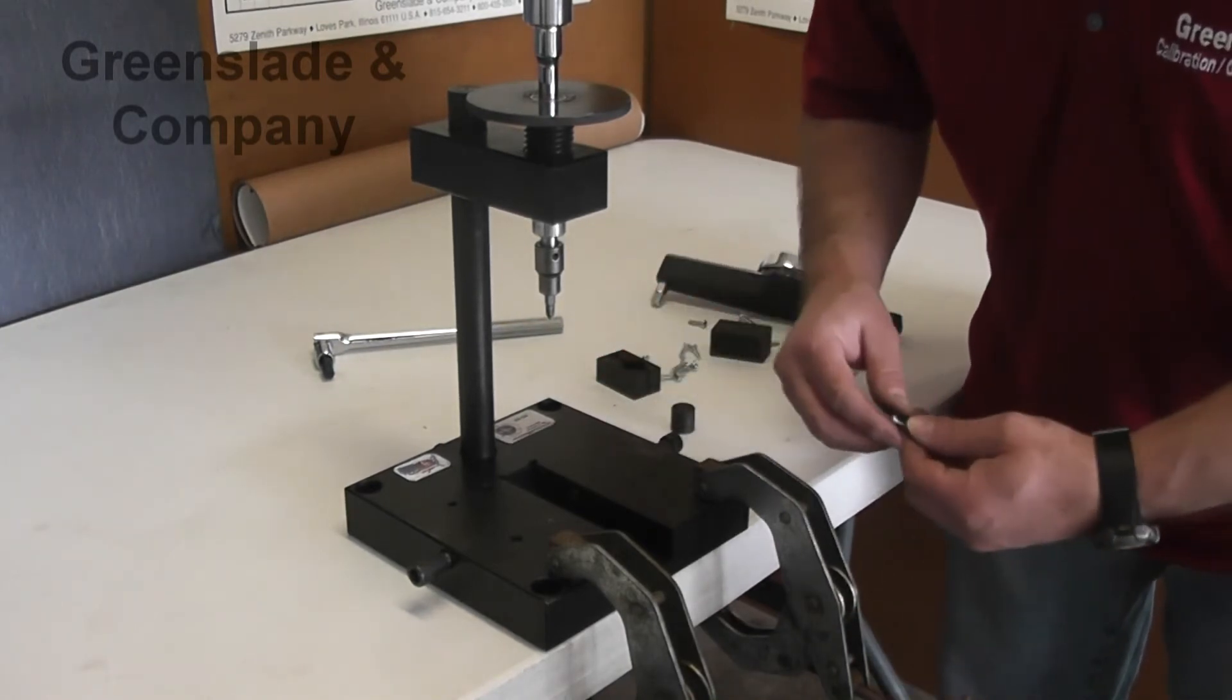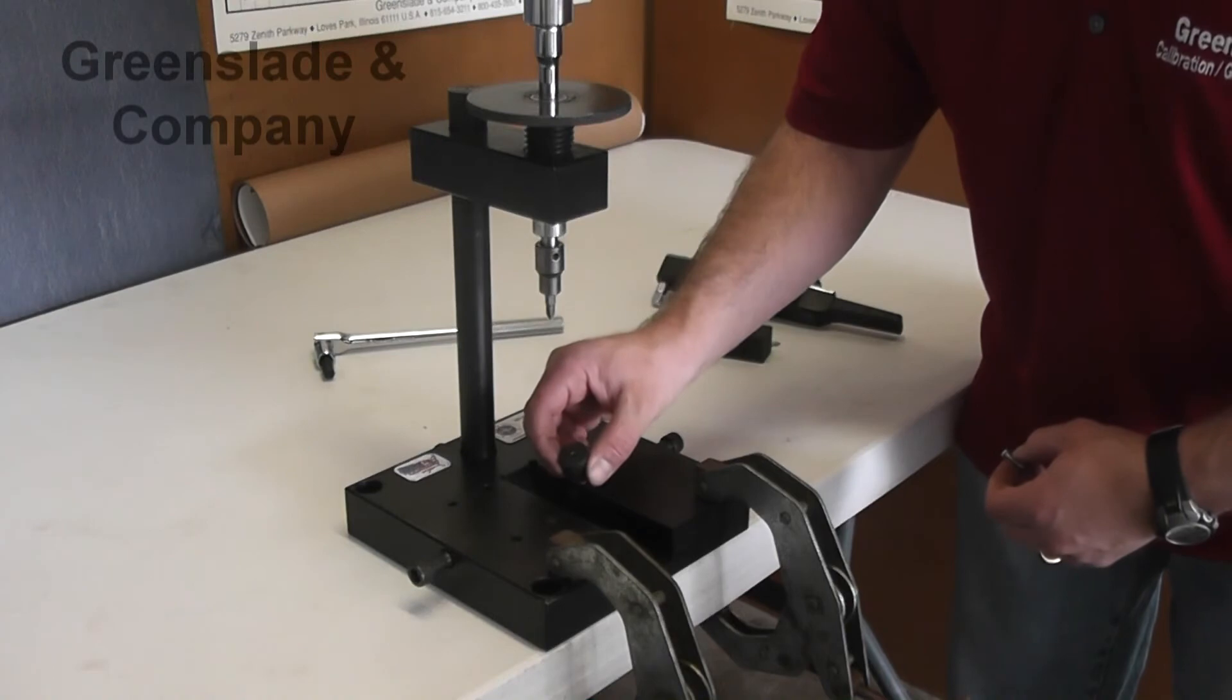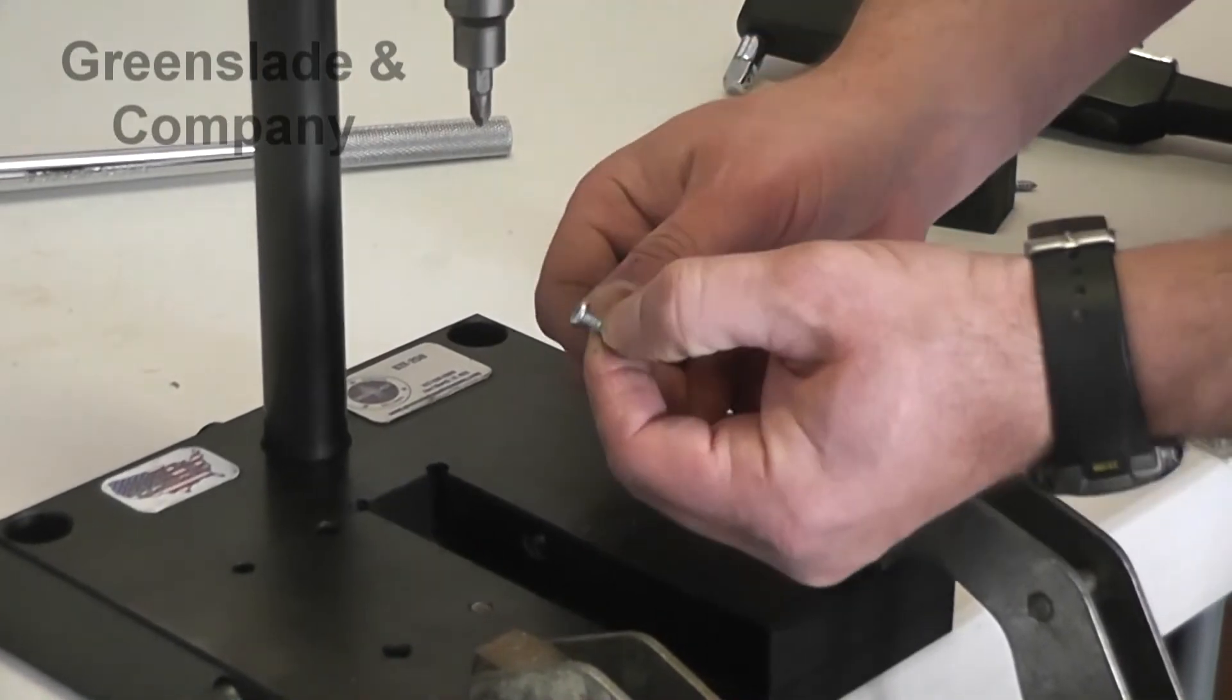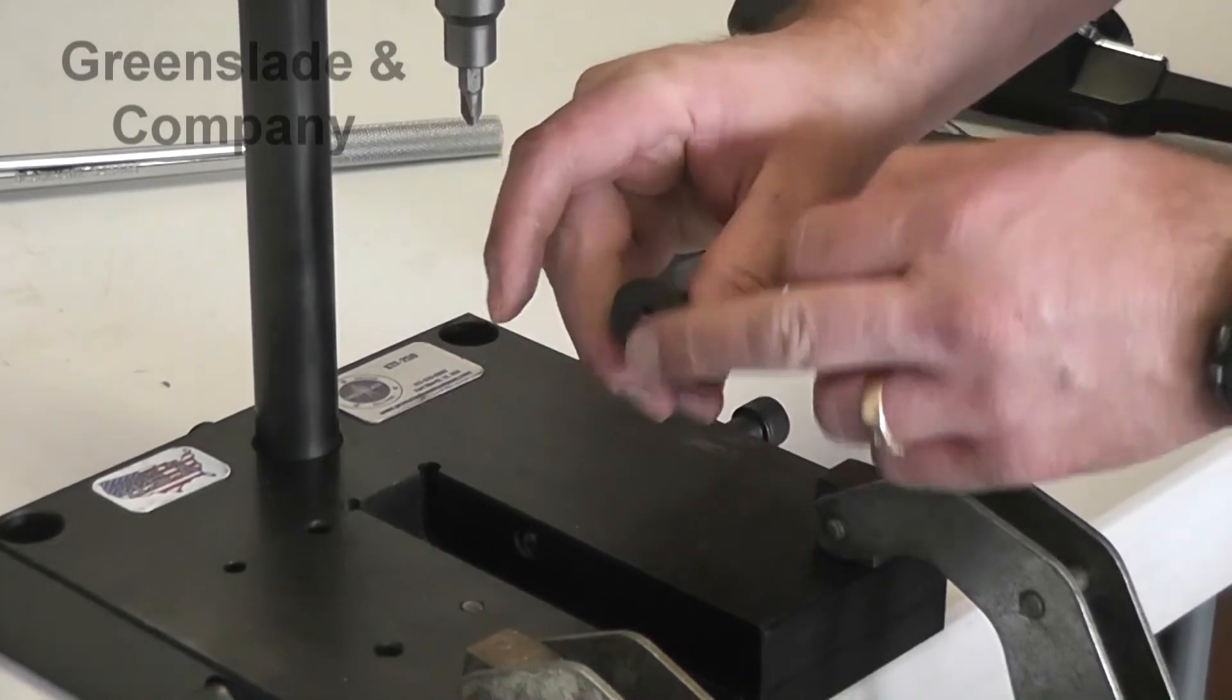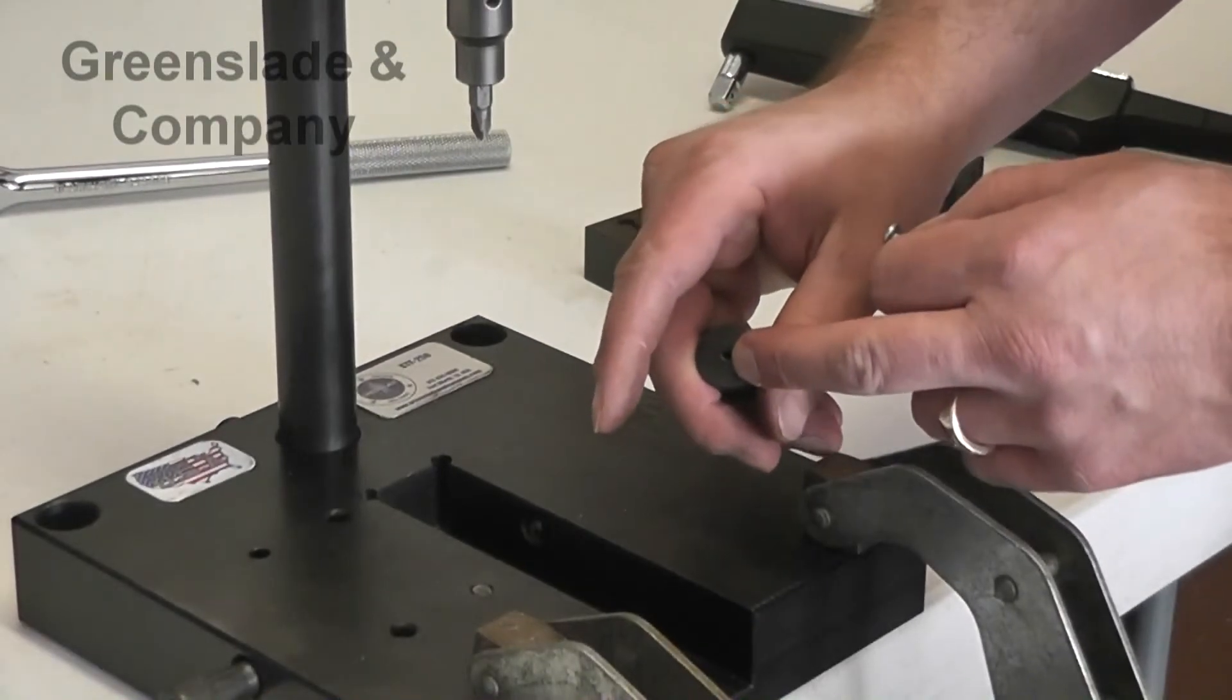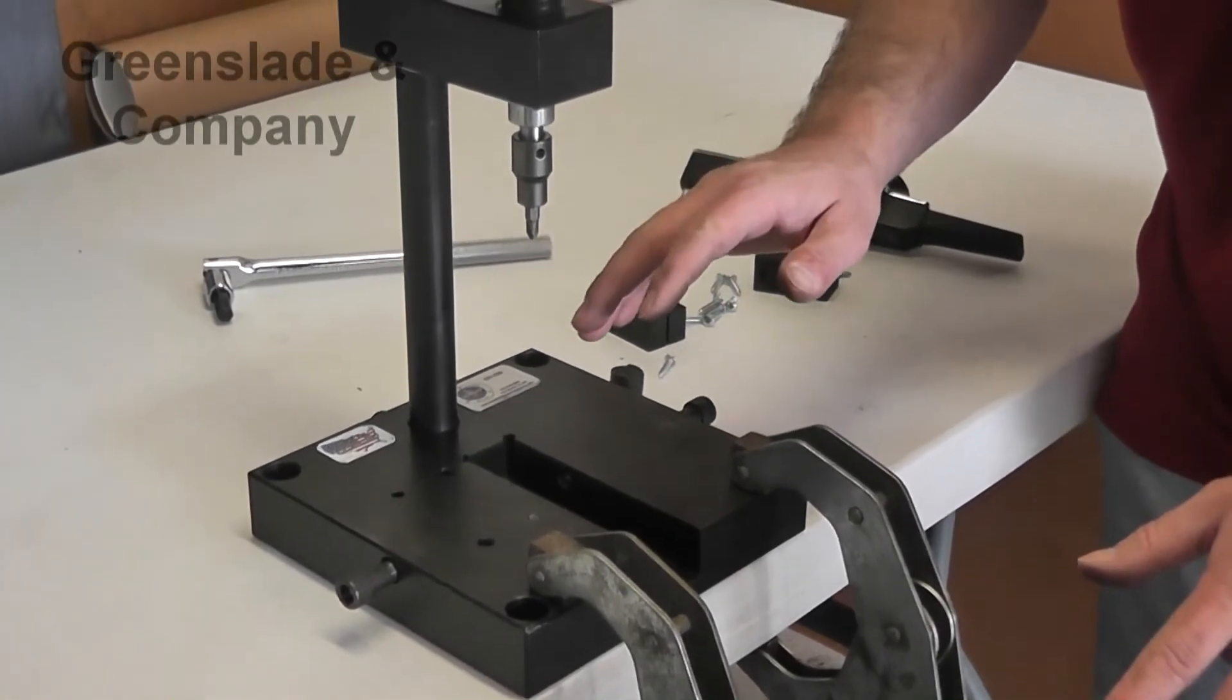You might run into very short screws where you barely have any threads. When you are testing and you put your screws in your collet, you want to make sure that you at least have one to two threads above the top surface of your collet. That's for the really short screws because you don't want to be bearing down on the head.